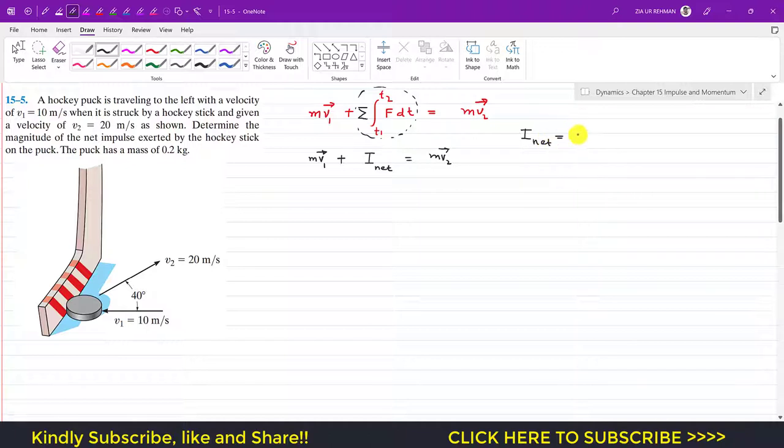Similarly, we can write that I_net is equal to mv2 minus mv1. Since the mass is scalar, we can take it common, that is m times v2 vector minus v1 vector.